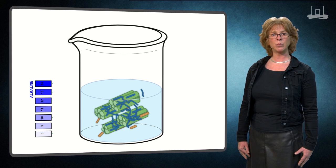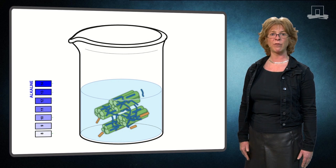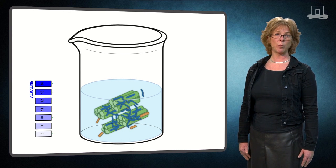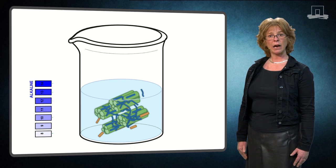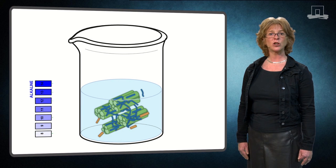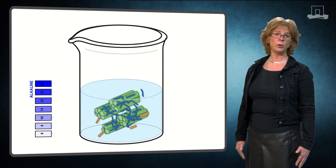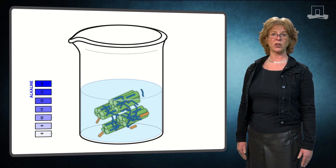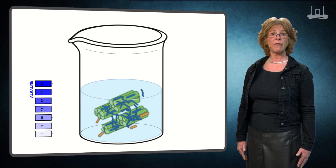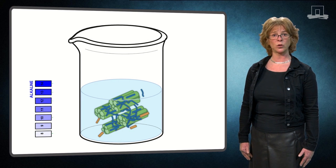Another alkaline pretreatment is ammonia fibre expansion or AFEX. Here, liquid ammonia is added to the biomass reactor. After a pretreatment, at a moderate pressure and temperature, the pressure is released. This process is able to remove both lignin and affect the crystallinity of the cellulose, and has been shown to lead to a significant increase in the enzymatic hydrolysis of cellulose to glucose.